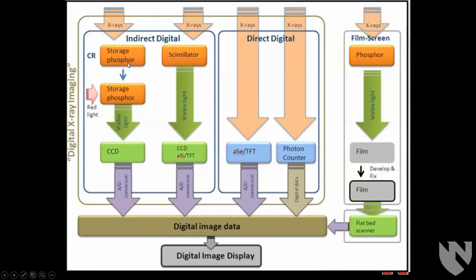In direct digital x-rays, the x-rays hit a storage phosphor on a sheet that looks similar to an x-ray cassette. You then use red light to release the image from the storage phosphor, which gets detected and turned into a digital image. Or you can have a scintillator that creates visible light going to a digital detector, or have the x-rays directly hit a photon detector that converts them into digital information directly.